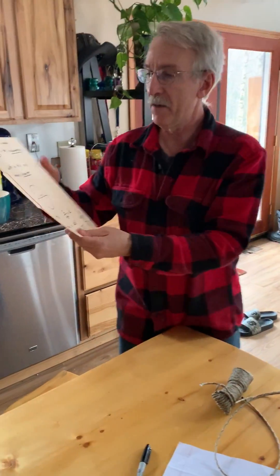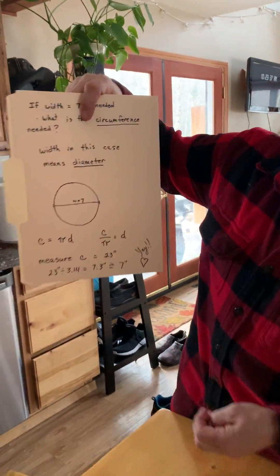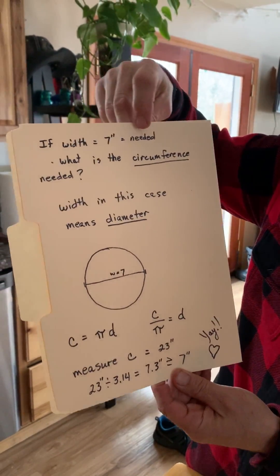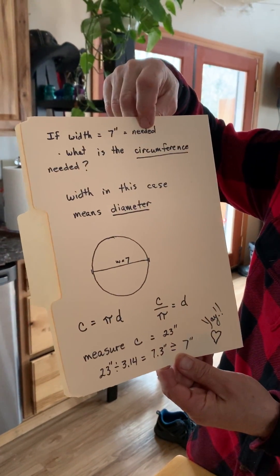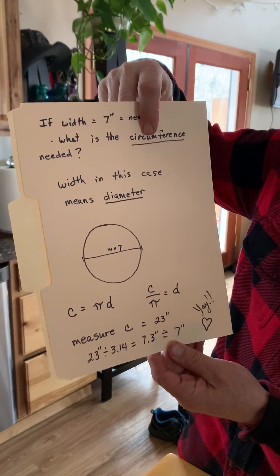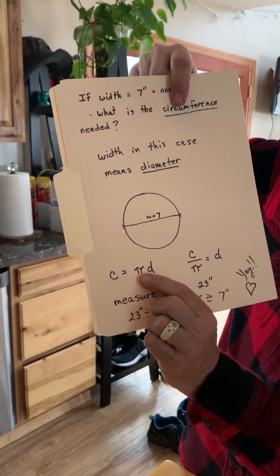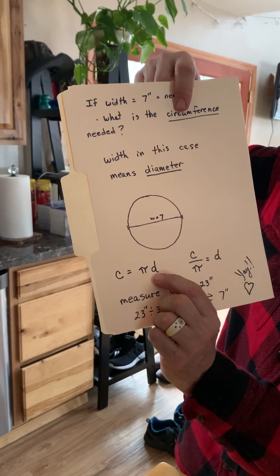So what I've done here is I've written it out. If I need a 7-inch width, what is the circumference that I need? Well, let's see here. The circumference is pi times the diameter of a circle.